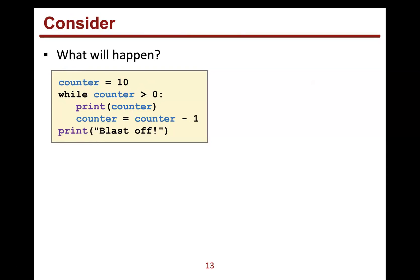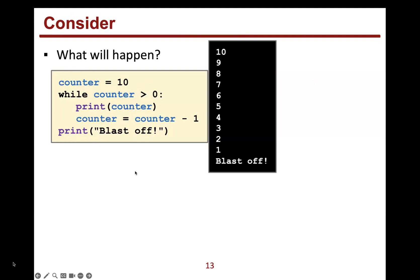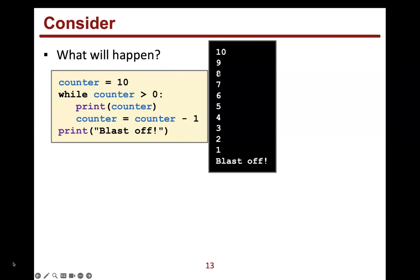Looking at this code, you can see it's a countdown. We start at 10 — counter equals 10, it's greater than zero, so we print 10, decrease the counter to nine. We check again: is nine still greater than zero? Yes, so we print it, decrease it. We keep going: print it, decrease it, all the way down.